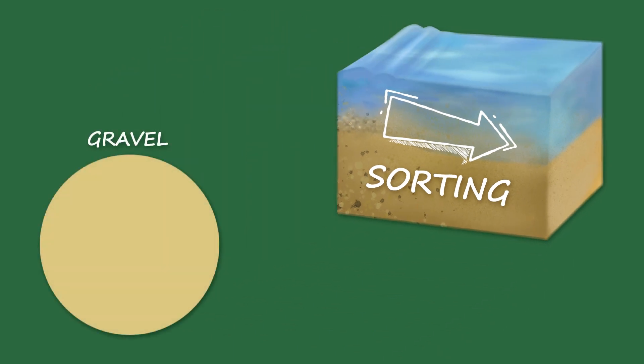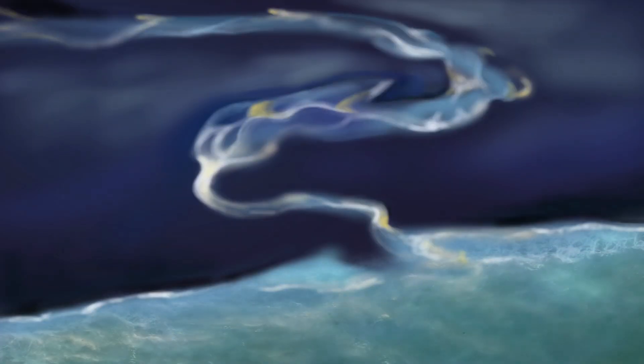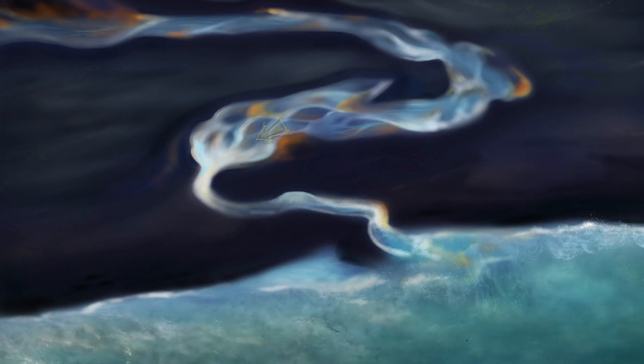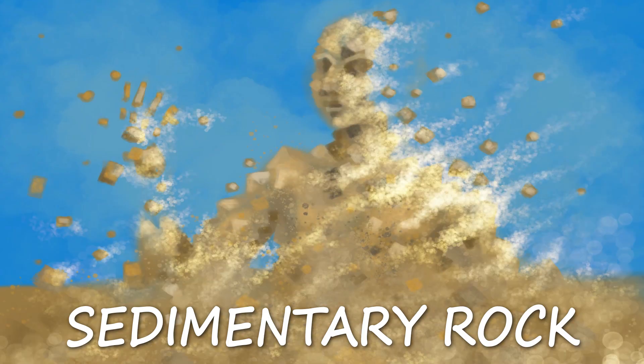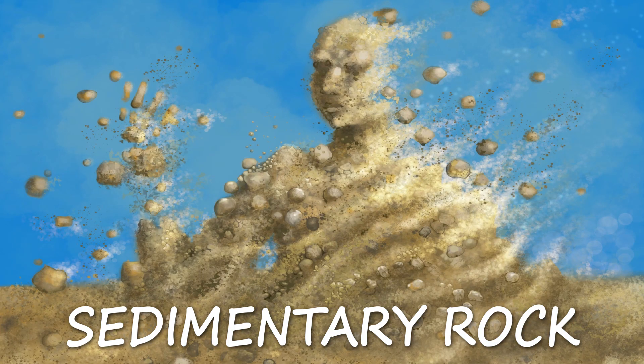The larger sediments like gravel don't get very far, but smaller sediments can be carried further. Sand gets a bit further than gravel, and tiny clay particles go all the way out to the ocean. Sedimentary rocks are formed when products of erosion and other particles accumulate and are subsequently cemented together.